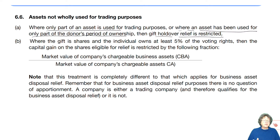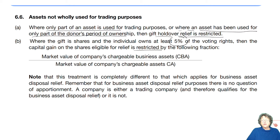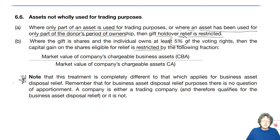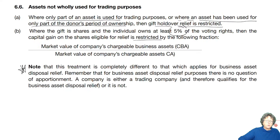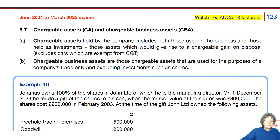Where it is shares and the owner owns at least 5% of the voting shares, then the gain will be restricted using the following fraction: chargeable business assets on the top and chargeable assets underneath. Note that this treatment is completely different to that which applies to business asset disposal relief. For business asset disposal relief purposes, there's no question of apportionment — it's either a trading company or it's not.